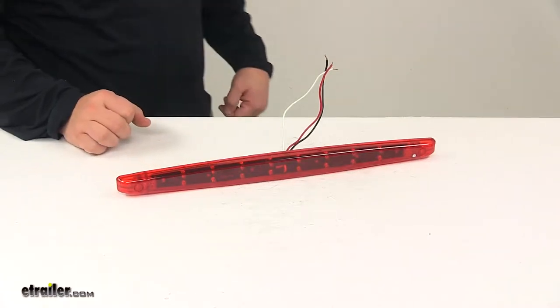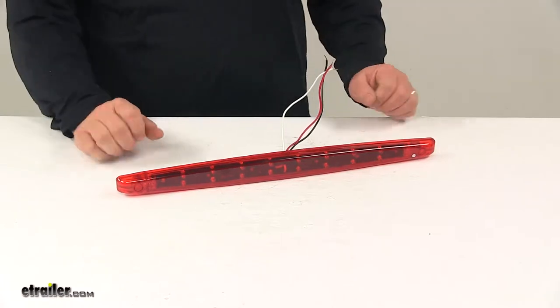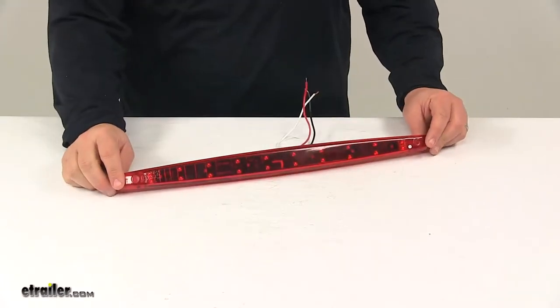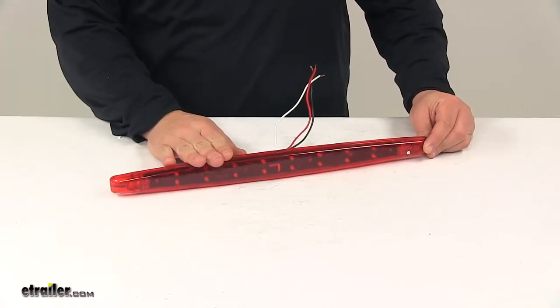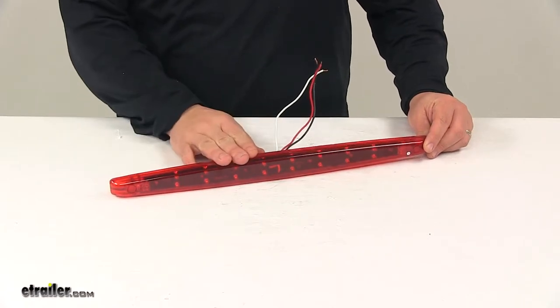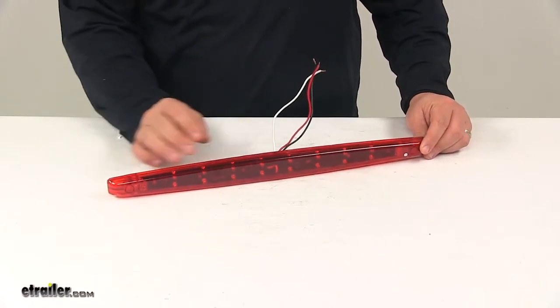Today we're taking a look at a red LED trailer tail light. Now this trailer tail light serves three functions. With this light you have your stop light or brake light, tail light which is your running lights, and your turn signal light.